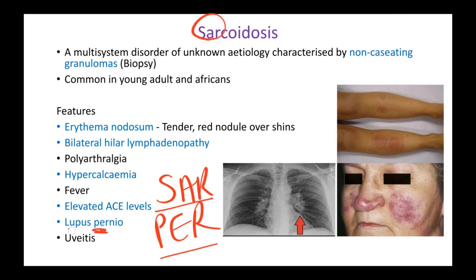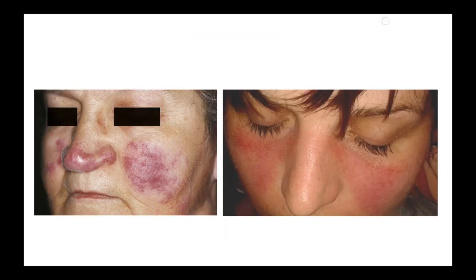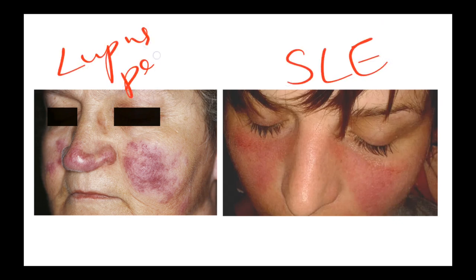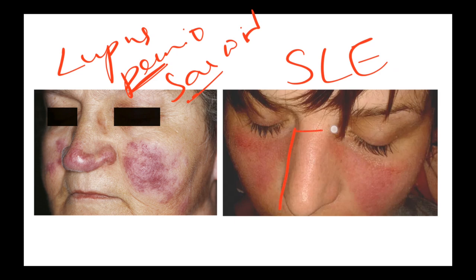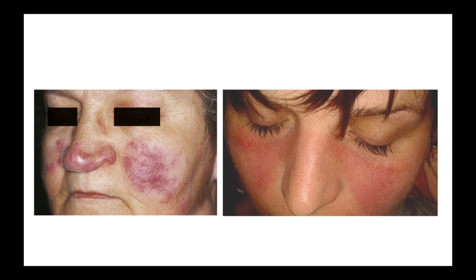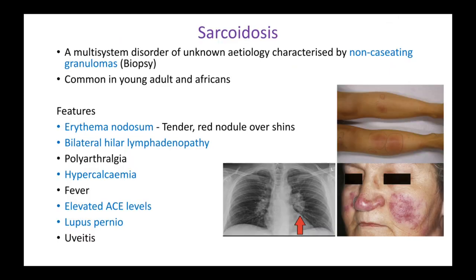Continuing with the mnemonic: lupus pernio for 'PER' in sarcoidosis. There are two types of lupus rashes: one seen in lupus erythematosus (SLE) and the other is lupus pernio, seen in sarcoidosis. The key difference is that in SLE the nasolabial folds are spared and the nose is not affected, whereas in lupus pernio it is a continuous rash - the nose is also affected. The last system is uveitis, where the eyes are affected with iris inflammation.